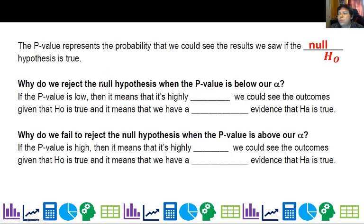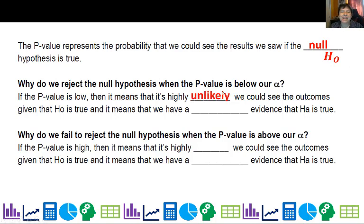So why do we reject the null hypothesis when the p-value is below alpha? Well, that means if the p-value is low, it's highly unlikely. For example, when I was on that trial and the guy had bought zip ties and duct tape — if what we assumed was true — the probability he just coincidentally bought those two hours before the kidnapping is really low. It captures our attention. It's highly unlikely we would see that if he was innocent. So we say that's too big a long shot, meaning we probably have sufficient evidence that he is guilty.